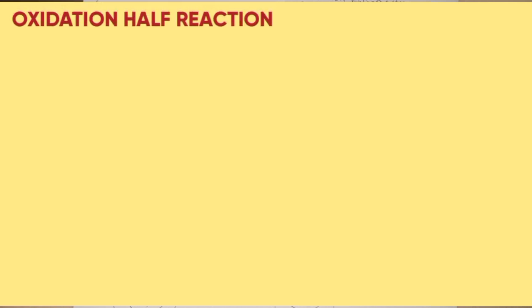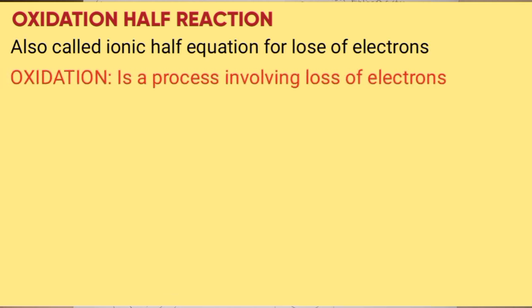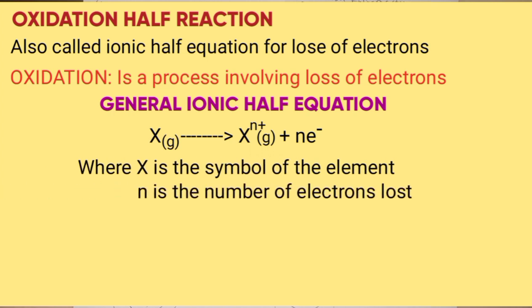Now, oxidation half reaction. This is simply the ionic half equation showing loss of electrons. Oxidation is a process involving loss of electrons. The general equation is X → X^n+ + ne, where X is the symbol of the element and n is the number of electrons lost.